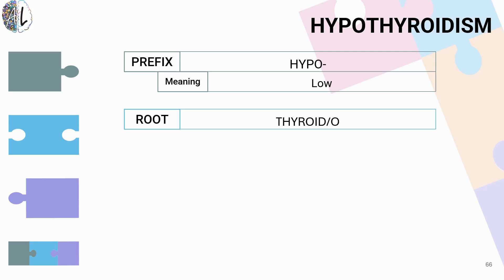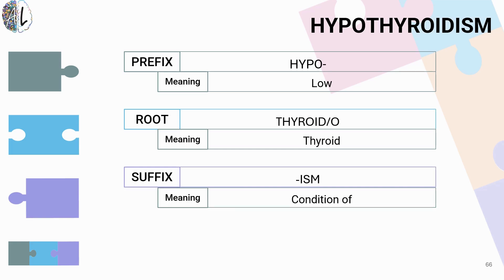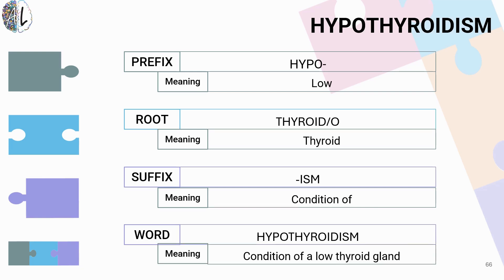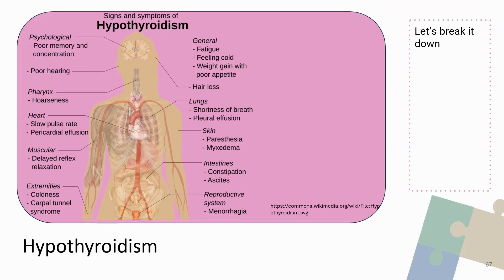Thyro or thyroido both refer to the thyroid gland in general — that little gland in your neck. And -ism is the suffix that refers to a condition of. So if we just look at the strict word breakdown of hypothyroidism, we're looking at a condition of having low thyroid hormone, or a thyroid gland that is producing too little.